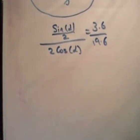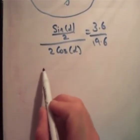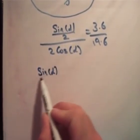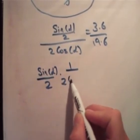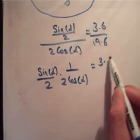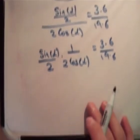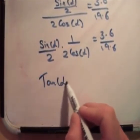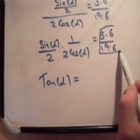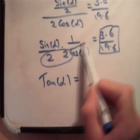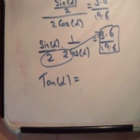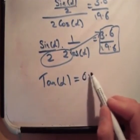So, you'll have that, and of course, if you're dividing by something, it's the same as multiplying by the inverse of it, or you might have heard the phrase, turn it upside down and multiply. So, it's going to be sine alpha, over 2, times 1, over 2 cos alpha, is equal to 3.6 over 19.6. Therefore, tan alpha is equal to this quantity here, multiplied by 4. All right, so it's 3.6 divided by 19.6, and you multiply that by 4, and you get an answer of 0.73.